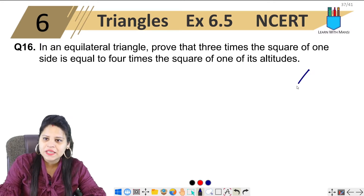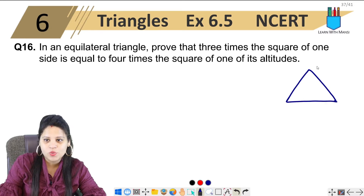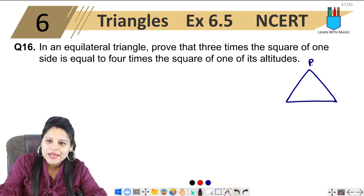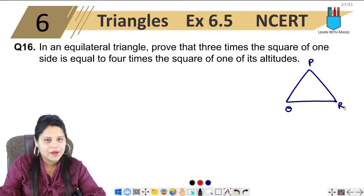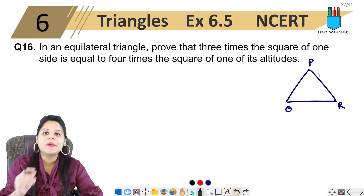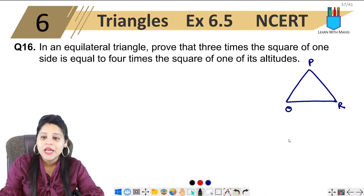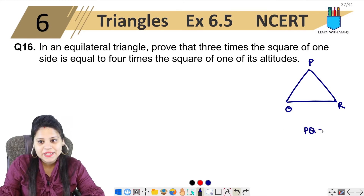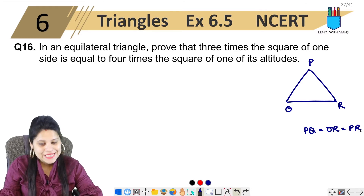We'll make a figure — an equilateral triangle. Let's suppose we have an equilateral triangle and call it PQR. In this equilateral triangle, we know that all the sides will be equal, so PQ, QR, and PR are all equal.